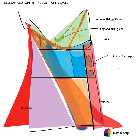Level three has borders of the sternocleidomastoid laterally and the sternohyoid medially, between the inferior border of the hyoid and the inferior border of the cricoid cartilage. Level four has the same medial and lateral boundaries, but lies beneath the inferior border of the cricoid cartilage down to the clavicle.